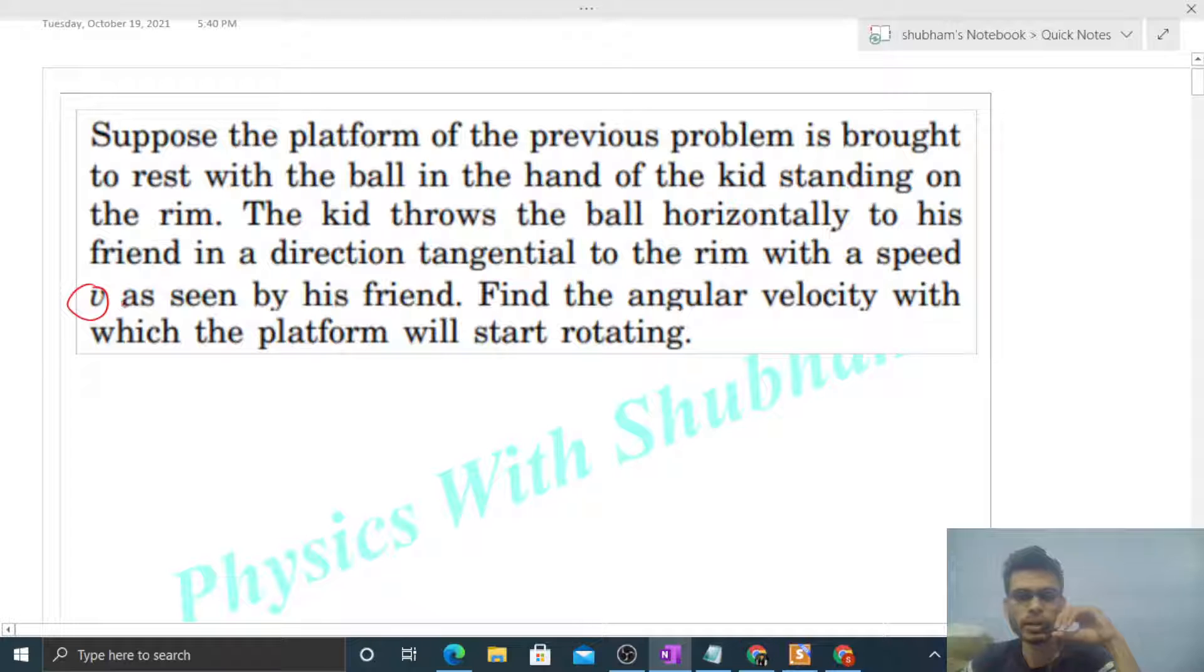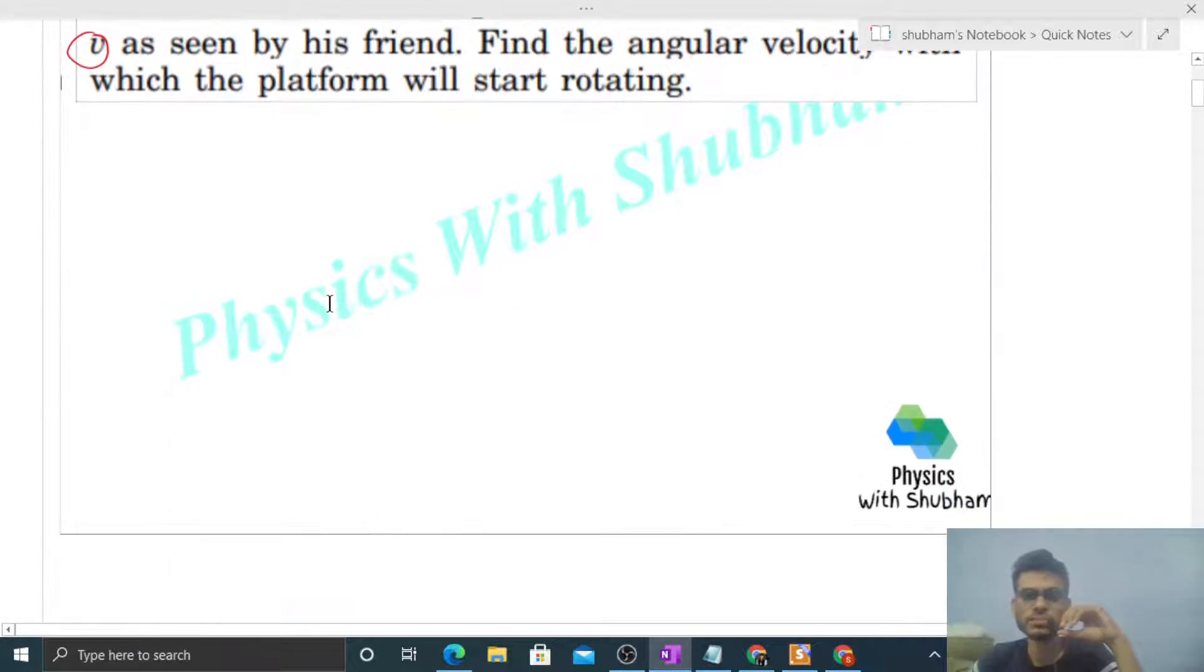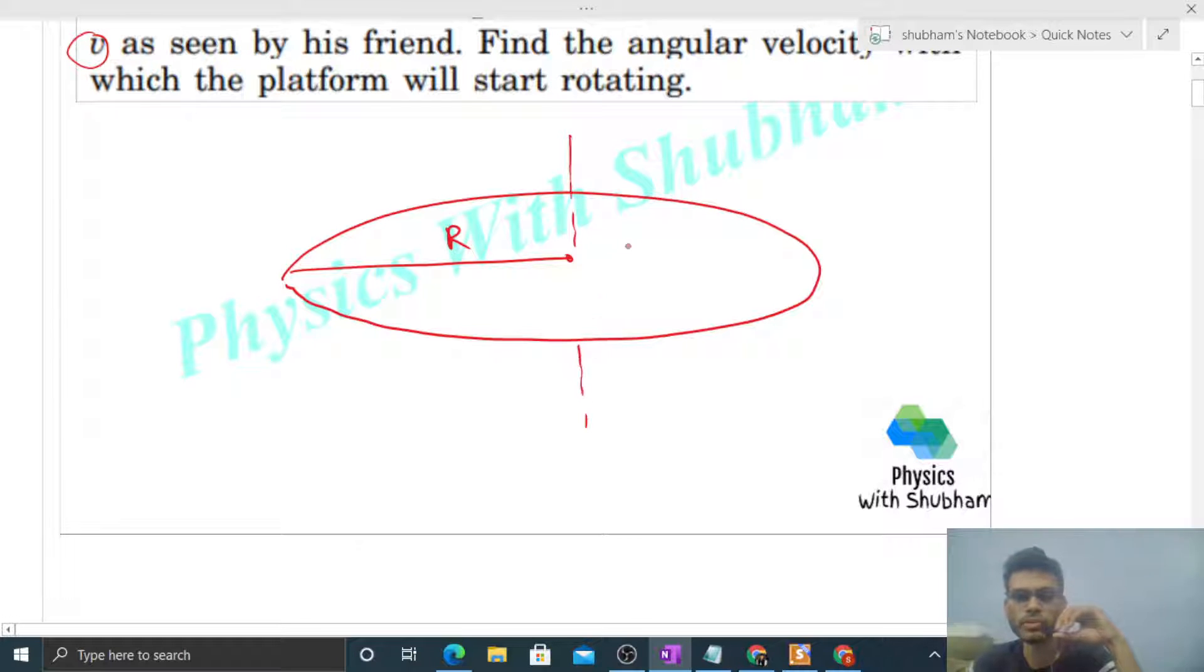Find the angular velocity with which the platform will start rotating. Just like we discussed in the previous problem, there's a platform of radius R and it is free to rotate about its axis. The moment of inertia of this platform is I, and there is a kid standing on the platform at the edge.